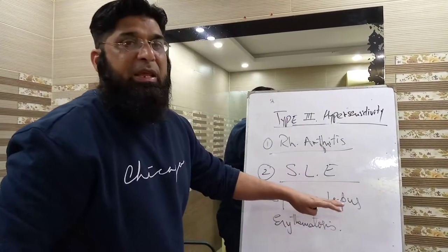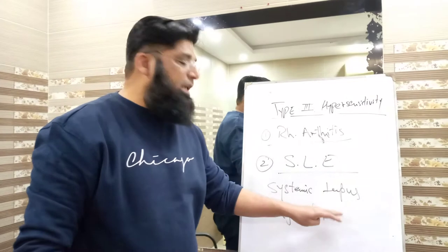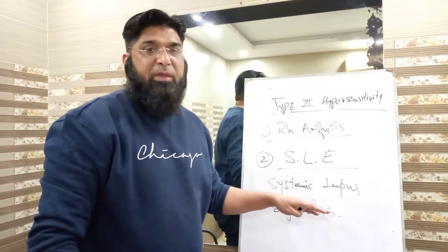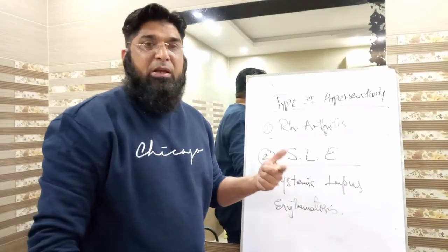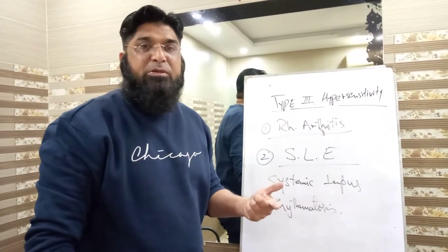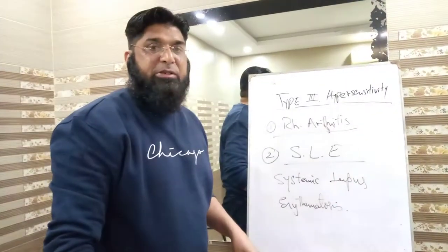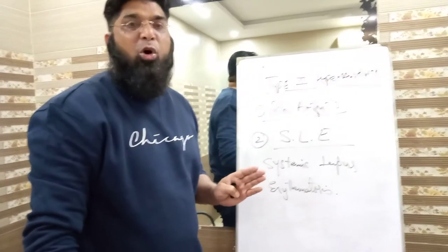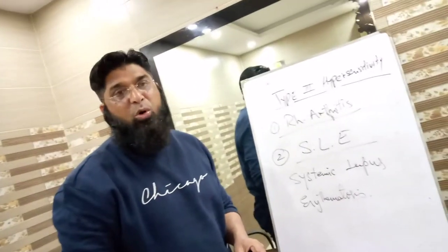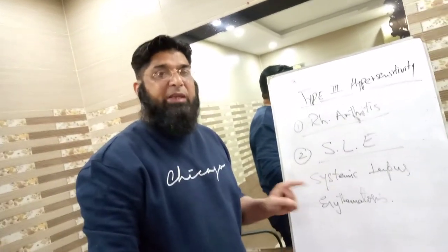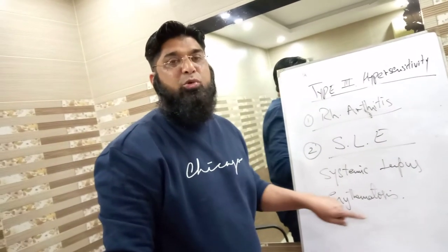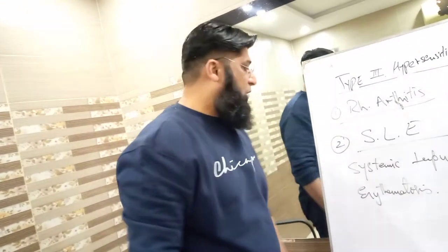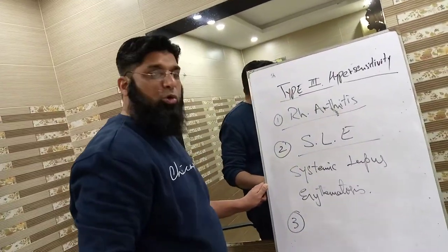Number two: SLE — systemic lupus erythematosus. It is a multi-system disease that involves different systems of the body like the skin, face, lungs, and kidneys. In SLE, antibodies are formed against the DNA, and this leads to destruction of different tissue structures in the body of the host.